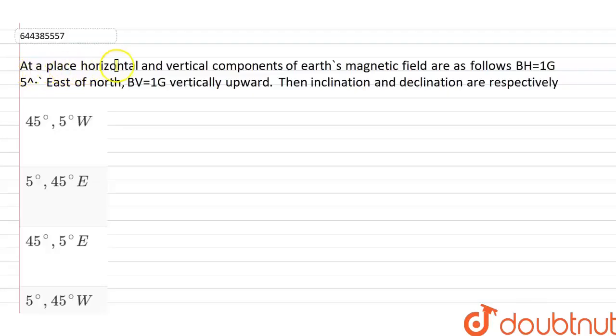At a place, horizontal and vertical components of Earth's magnetic field are as follows: BH equal to 1G, 5 degree east of north, BV equal to 1G, vertically upward. Then inclination and declination are respectively.